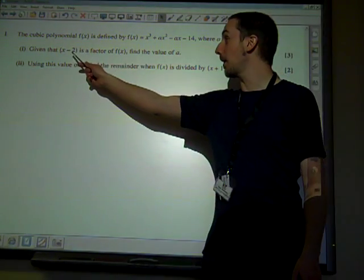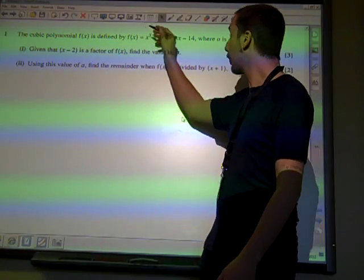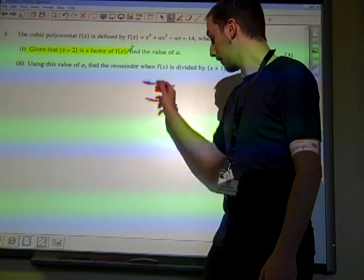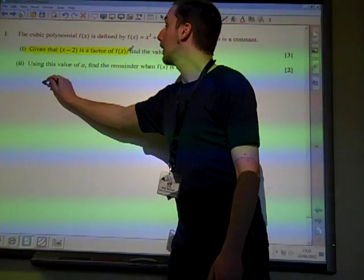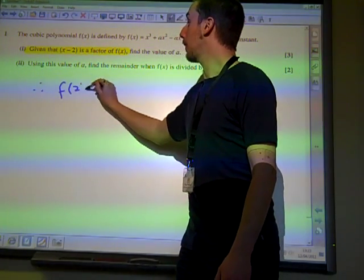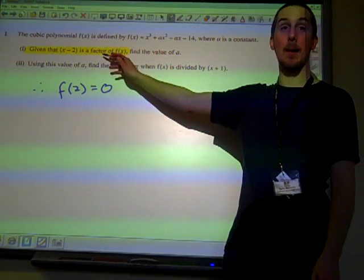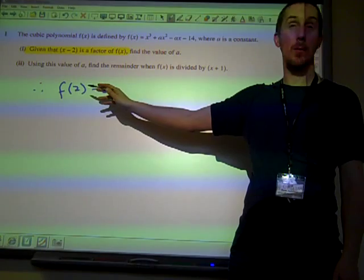We're told that x minus 2 is a factor. And from that bit of information, we read that as saying f of 2 is equal to 0. That's all that we need to do. We just want to read that and decide that it means f of 2 is 0.